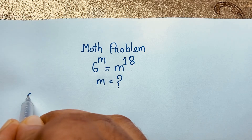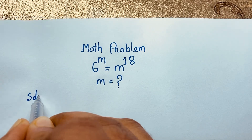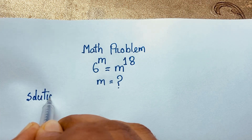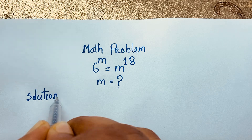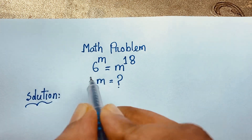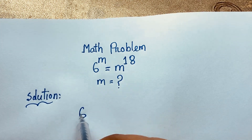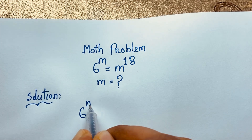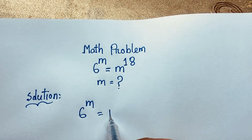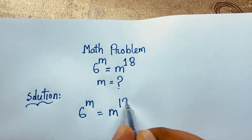So our math solution — I solved this question using an easy method. It is an easy math problem. Our question is 6 to the power m is equal to m to the power 18. This is our question.